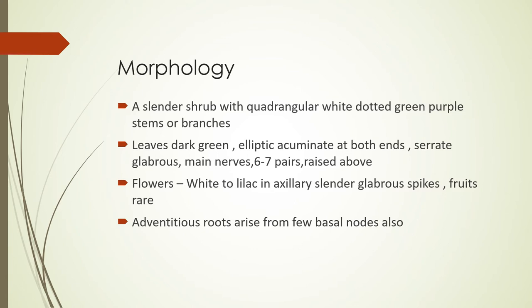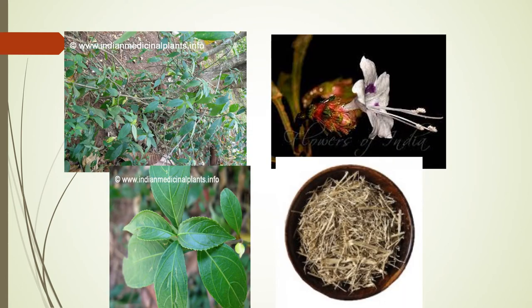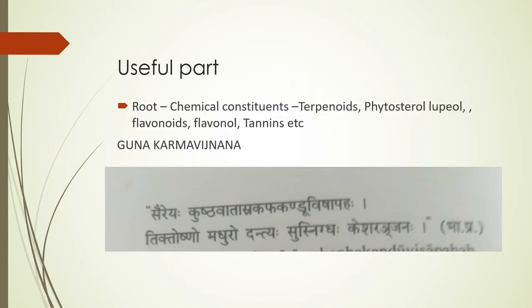Adventitious roots arise from few basal nodes also. In the picture, you can see the plant, the serrated leaf margins, and also the typical Venetian flower pattern and roots — these are the roots of Sahajara. The main chemical constituents of the roots are terpenoids, phytosterol, lupiol, flavonoids, and tannins. Reference from Bhavaprakasha: Sahajara — kushtavada, asra, kabha, kandu vishataha.